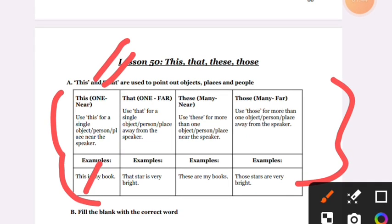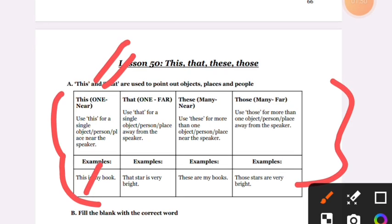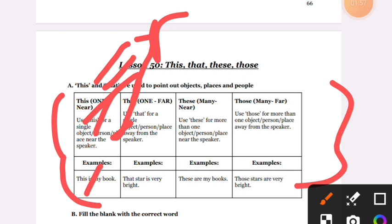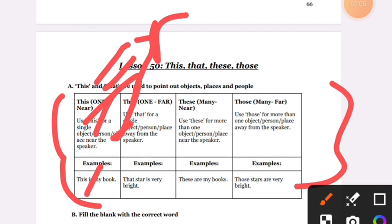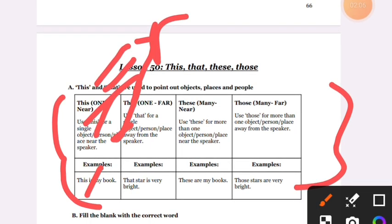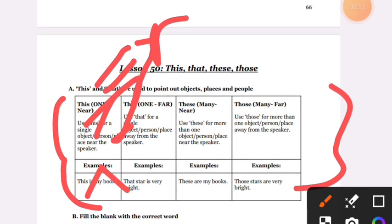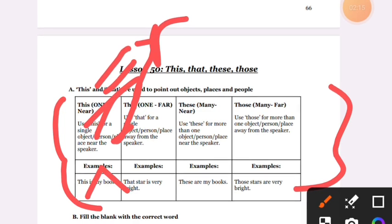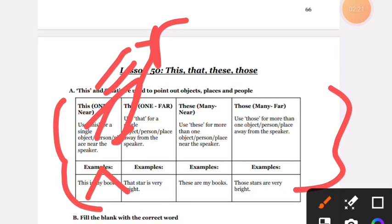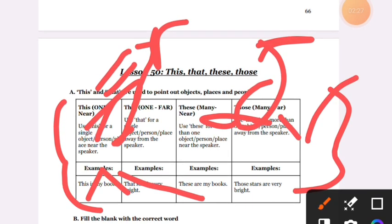That is the same thing but far away. That star is very bright. These are my books - for plural things that are near. Those are for many things that are far. Those stars are very bright.